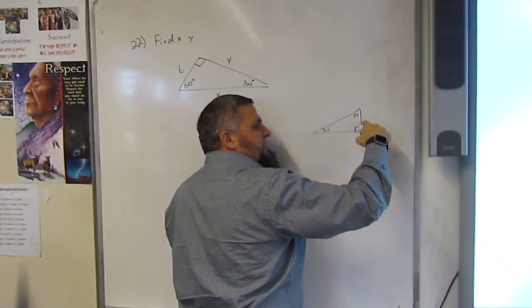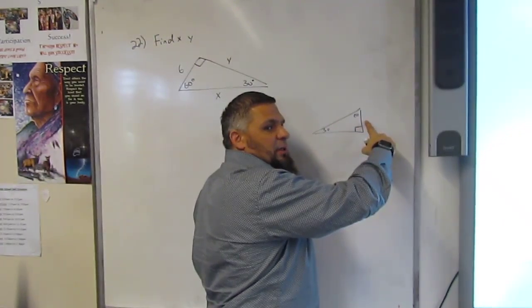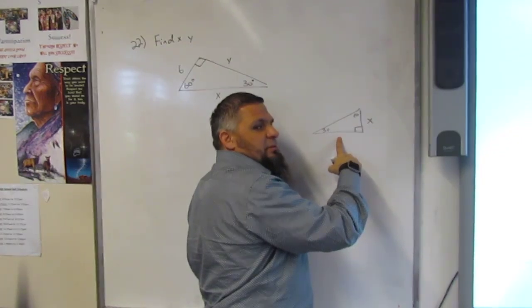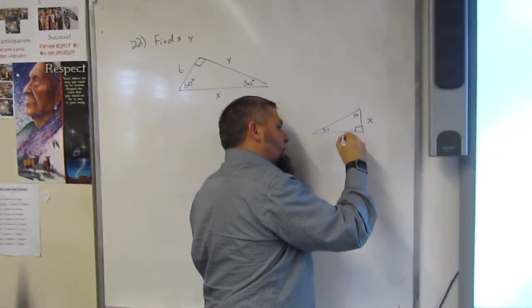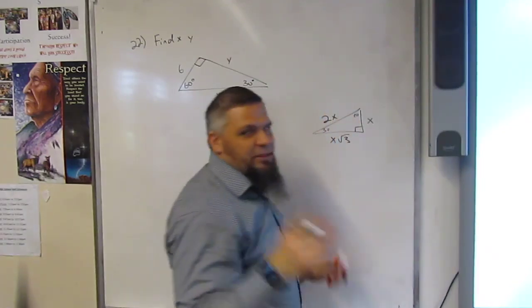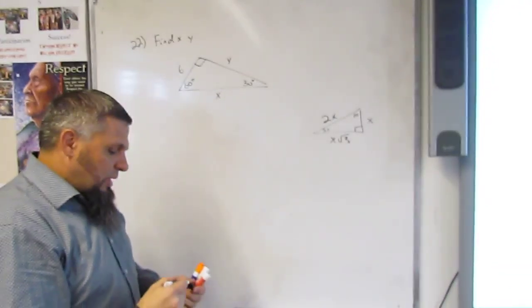Can you remember what was here? Where? X. X. What's here? Square root of 3, X. Root of 3, X. Good. 2X. And 2X. And somebody is paying attention. Love it.